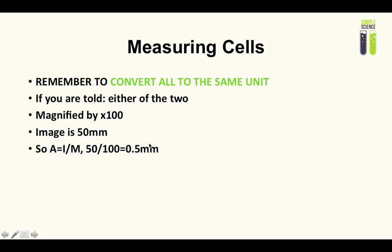If you're getting a number in the same unit which is larger than your image size but it says it's magnified, you know you have gone wrong somewhere — double check your answer. You can be given any two of the three values. You could be given the actual size and the image, or the actual size and the magnification, and asked to find the image. It's just simple mathematics — cover up the triangle and rearrange the equation to get whatever you need.